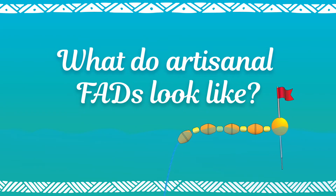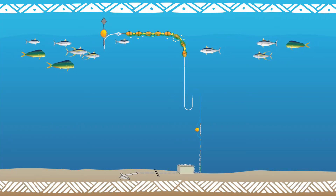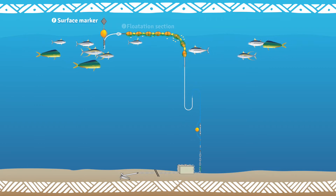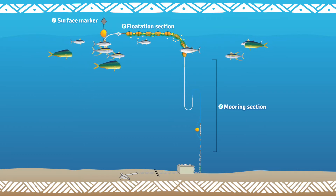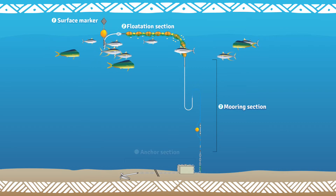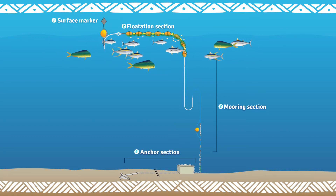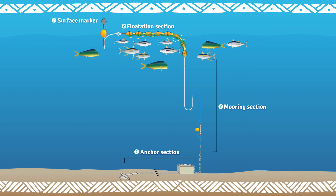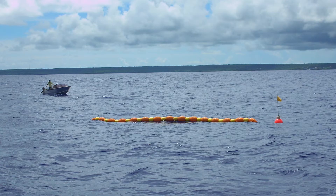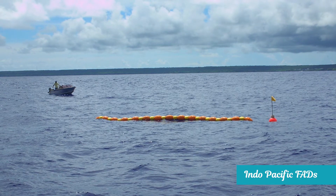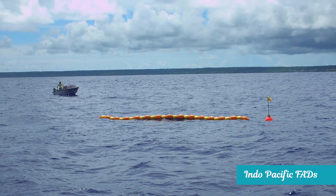What do artisanal FADs look like? Artisanal FADs are all anchored. They consist of: 1. A surface marker, 2. A flotation section, 3. A mooring section, and 4. An anchor section. There are several FAD designs in the Pacific Ocean. Here, we will focus on the Indo-Pacific FADs, which are commonly used in nearshore and offshore areas.